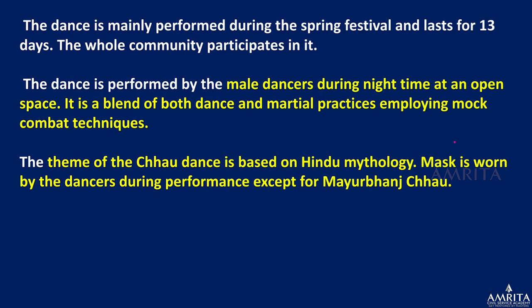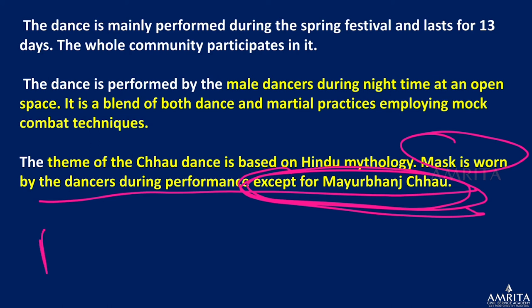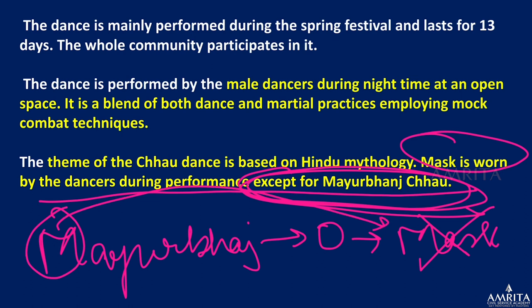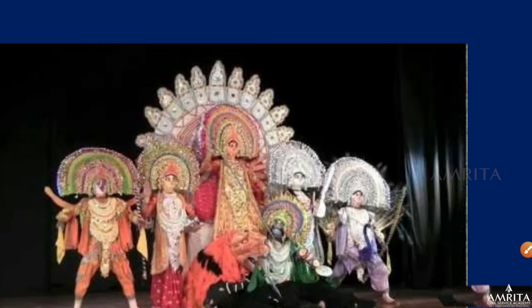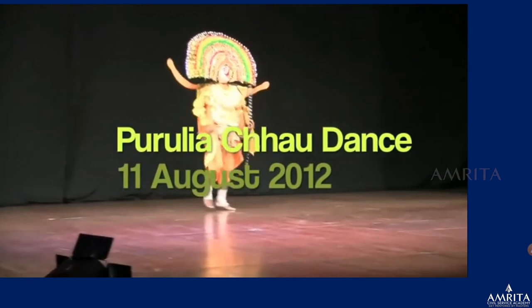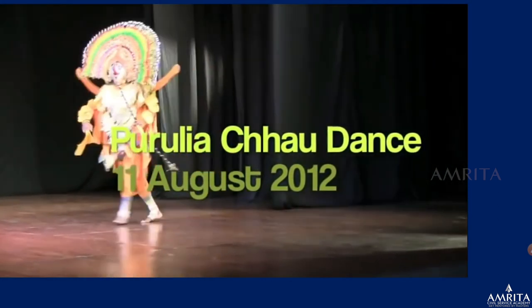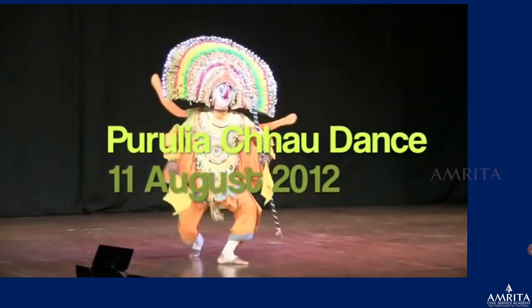The Chhau dance is performed by male dancers during the night at an open space. It is a blend of both dance and martial practice — the dancer wears a mask and holds a weapon while performing. You can see from the video that the performer has a mask and holds a weapon, performing both dance moves and defense moves.